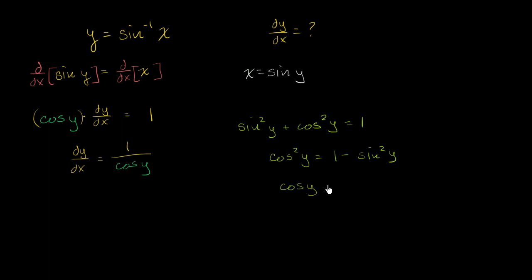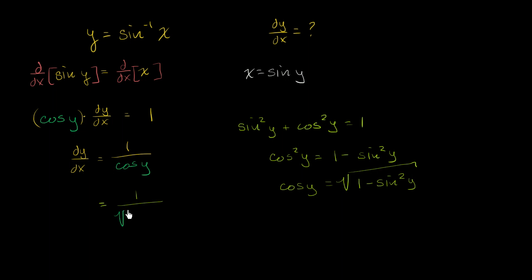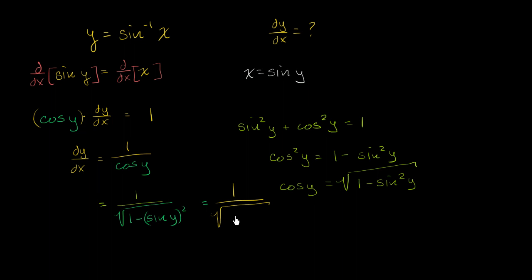So cosine of y — taking the principal root of both sides — is equal to the square root of one minus sine squared of y. We can rewrite dy/dx as one over the square root of one minus sine squared of y. We can write it as the square root of one minus sine of y squared. We know that this expression is x, so we're almost there — just a little drum roll.